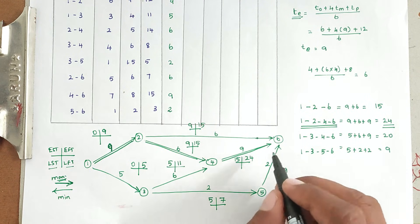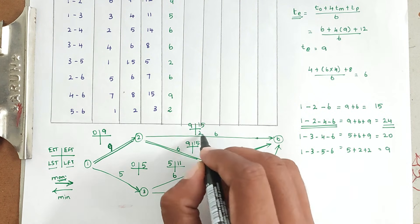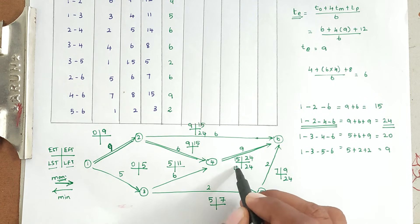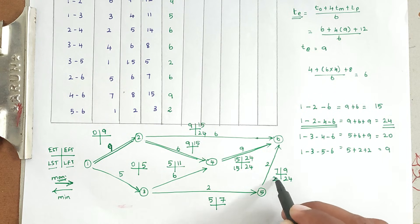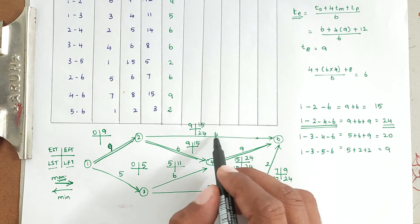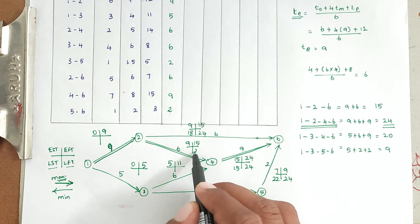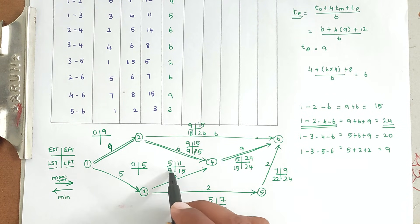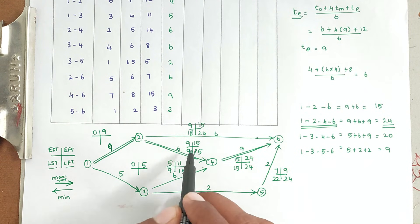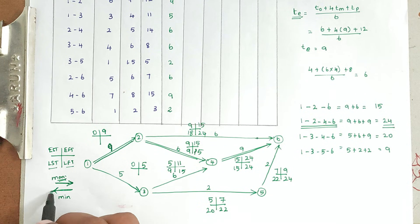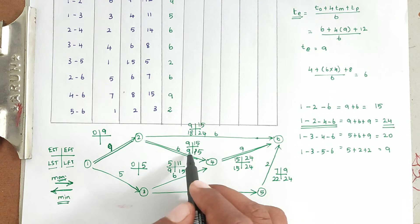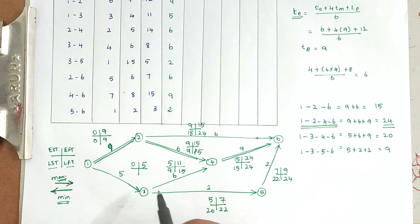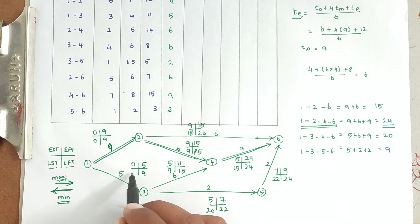Now we find LFT and LST values. LFT at the final node is 24. Working backward: 24 − 9 = 15, 24 − 2 = 22, 22 − 2 = 20, 24 − 6 = 18. At node 3, LFT is 9, so 9 − 5 = 4 for LST of activity 1-3. At node 1, we have incoming values 18 and 9; taking the minimum gives 9, and 9 − 9 = 0. LST of activity 1-3 = 9 − 5 = 4.